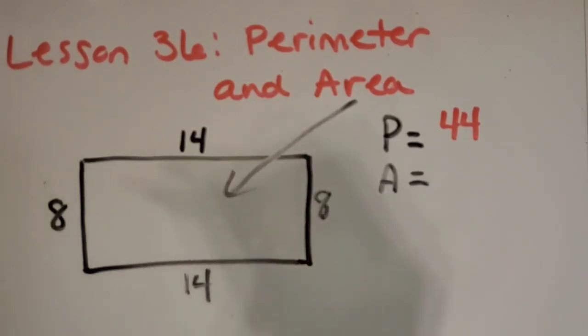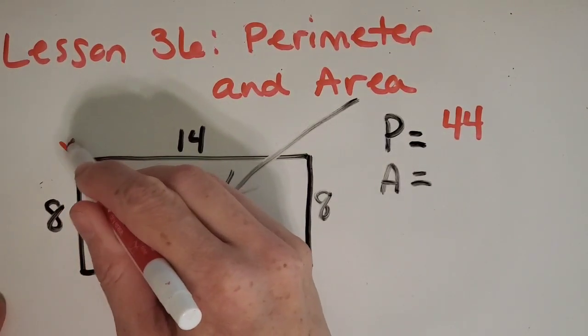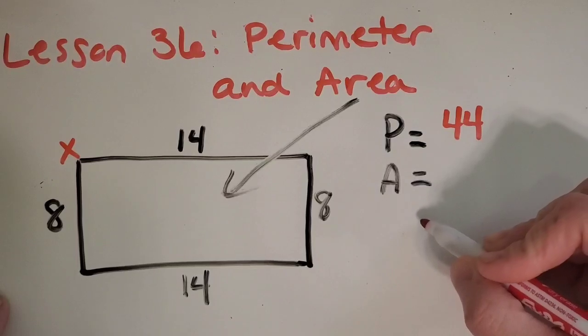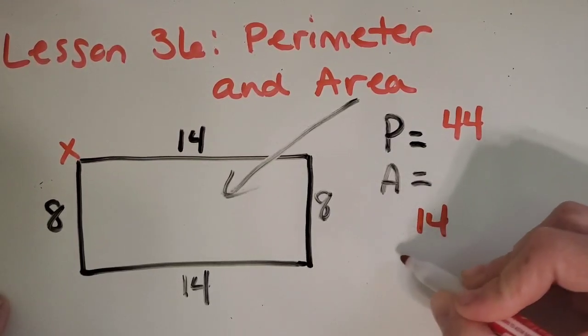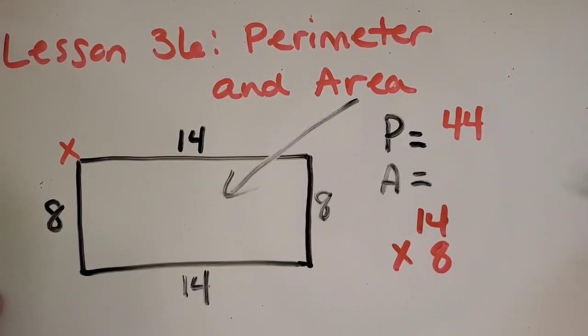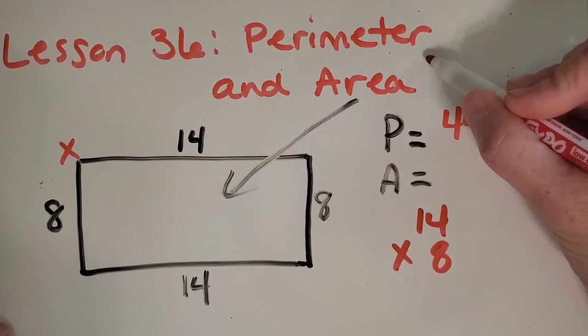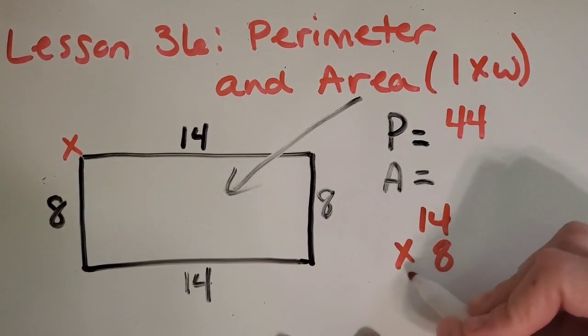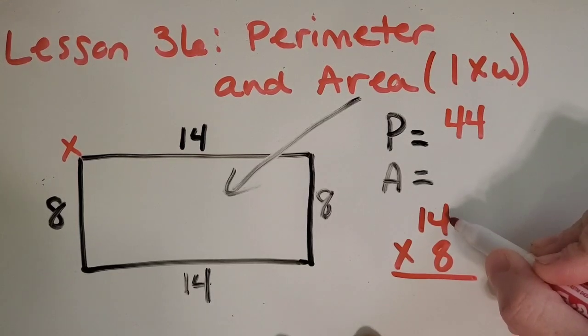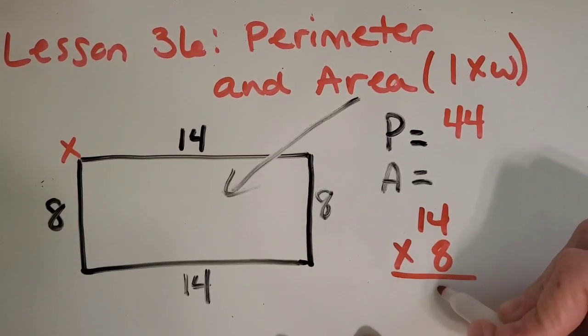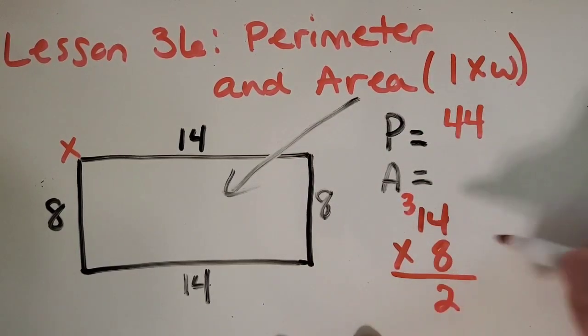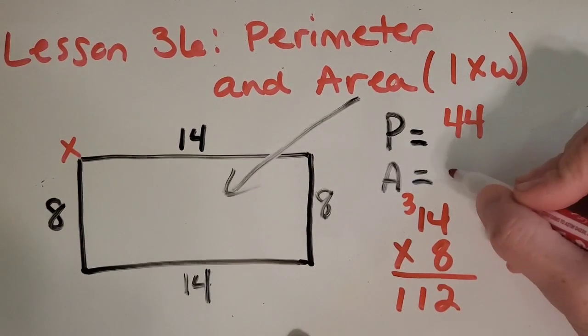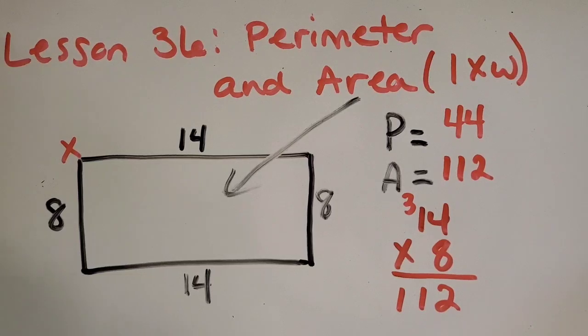I bet someone thought of eight rows of or groups of 14 is really the same as multiplication. So we can do 14 times 8. And another thing to know is that area can be written like this length times width. So let's go ahead. 8 times 4 is 32. 1 times 8 is 8 plus the 3 is 11. So for the area, I'm getting 112 square blocks.